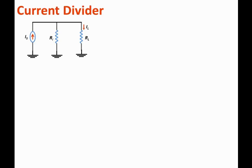The internal resistance Ri with the internal current source may assemble a practical current source. The current divider states that the current to the load, Il, will equal the value of the opposite resistor, that is Ri, over the sum of the two resistors, which are Ri plus Rl, times the total current.